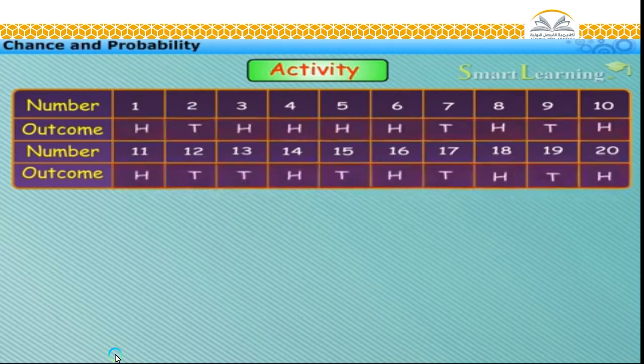From the table, it is clear that there is no fixed pattern for the occurrence of head or tail. It is a matter of chance that in a particular throw, we get either head or tail, as both are equally likely to be obtained.